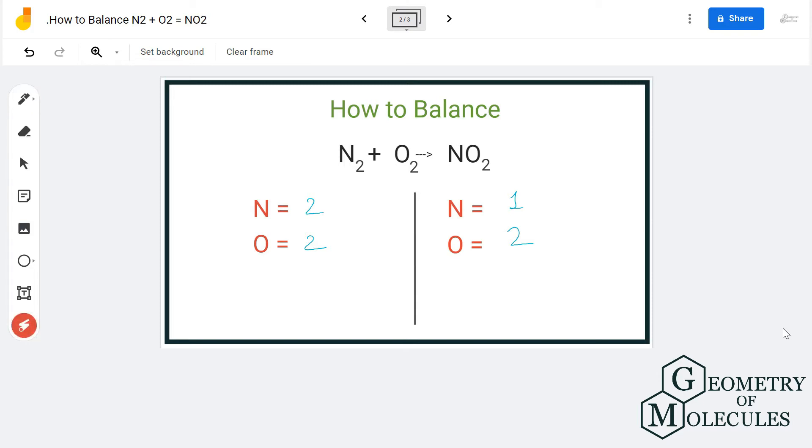So first we will balance out the nitrogen atoms on both sides. As you can see, the reactant side has two nitrogen atoms, so we will also make it two on the product side by multiplying this product by two.